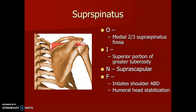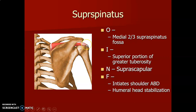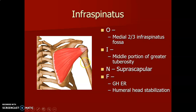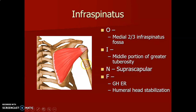Infraspinatus originates from the medial two-thirds of the infraspinous fossa and inserts on the middle portion of the greater tuberosity. Also innervated by the suprascapular nerve, it causes glenohumeral joint external rotation and stabilizes the humeral head. Teres minor originates from the upper two-thirds of the dorsal surface of the lateral border of the scapula and inserts on the lower portion of the greater tuberosity. Innervated by the axillary nerve, it causes external rotation of the glenohumeral joint and stabilizes the humeral head. So supraspinatus, infraspinatus, and teres minor insert in that order from superior to middle to lower part of the greater tuberosity.